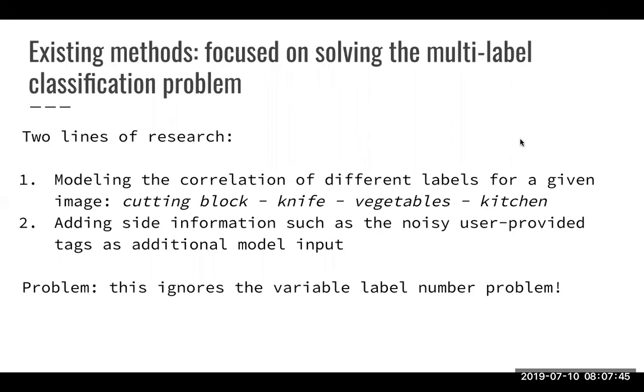So what has been done to tackle these problems? Most of the research is focused on solving multi-label classification problem and we can see two lines of research here. The first line is focused on modeling the correlation of different labels for a given image. So if you see a cutting block it's pretty likely that there will be a knife or vegetables in the image and that the cutting block is in the kitchen. So you can kind of model this correlation and get a little bit more information about what is likely to be an image. And then the second line of research they simply add a user provided text along with the image as model input. Users did provide additional information about an image and of course that is very helpful when you want to do or want to know what an image is about. So these are the main two lines and two main lines of research and the problem with these kinds of research is that they ignore the second challenge I mentioned the variable label number problem. So although these are steps in the right direction they ignore an important problem so they are suboptimal.